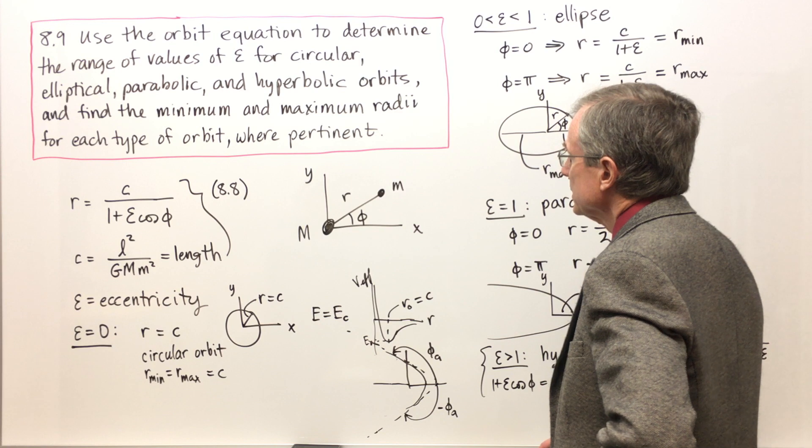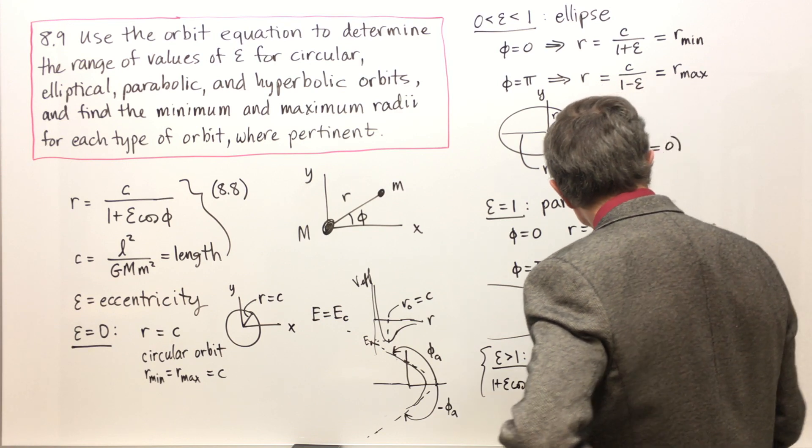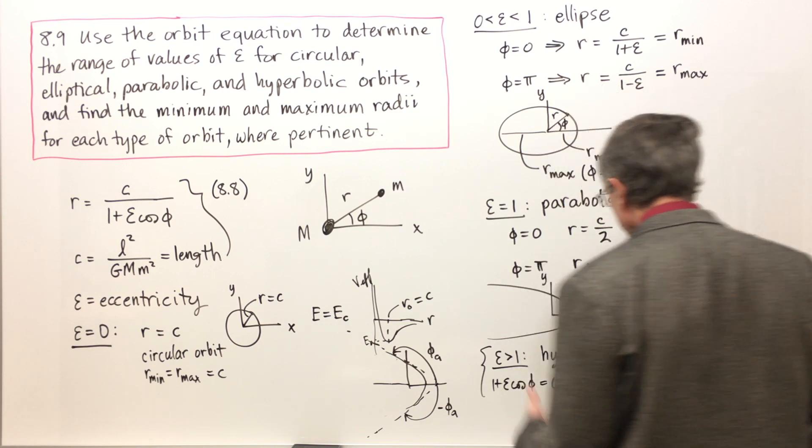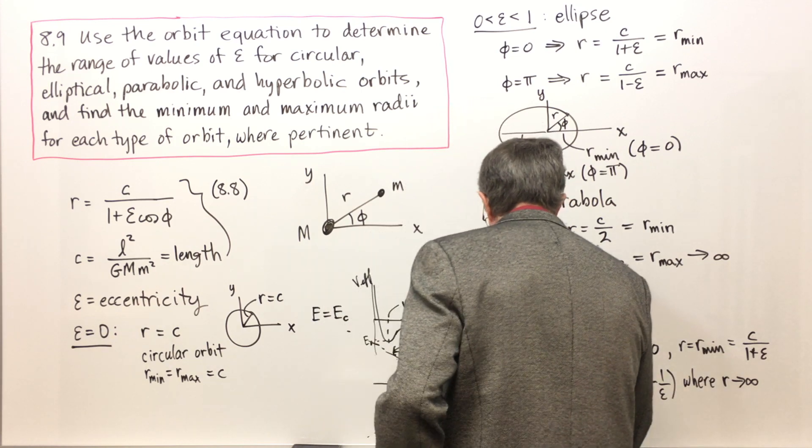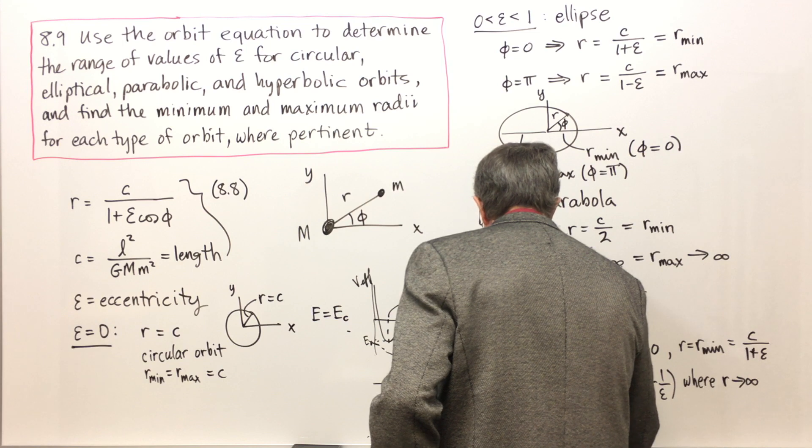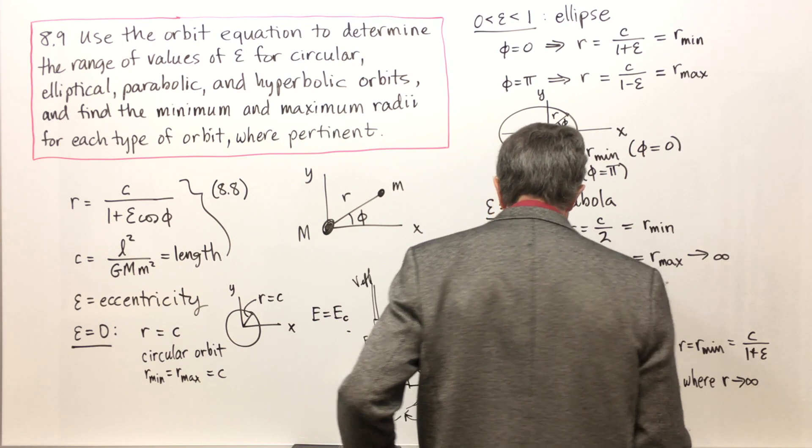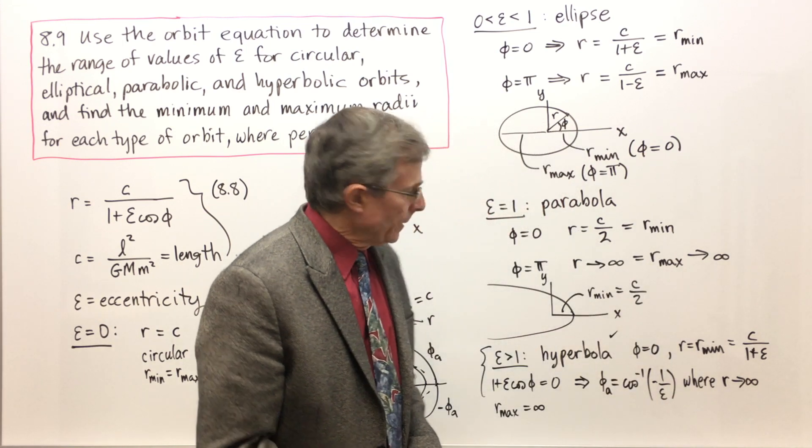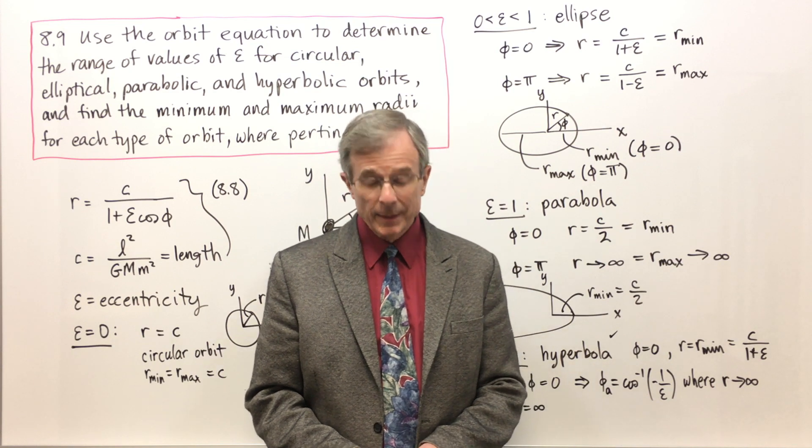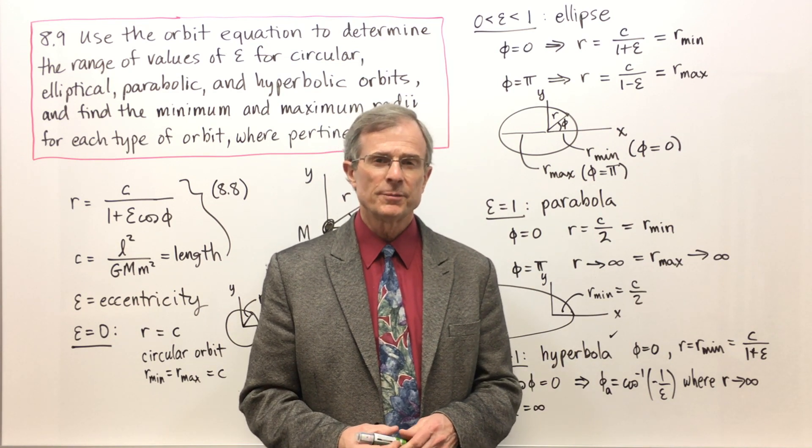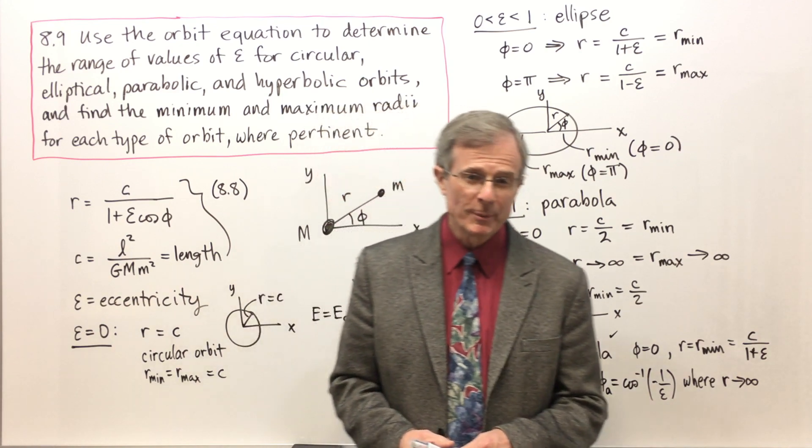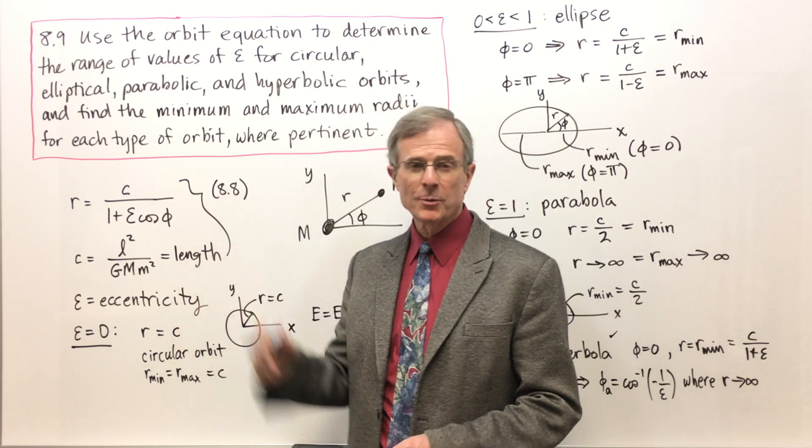We've got the minimum radius here. The maximum for the hyperbola is infinite. That's how you get the radii for these different types of orbits from the orbit equation, and we're going to move on now.